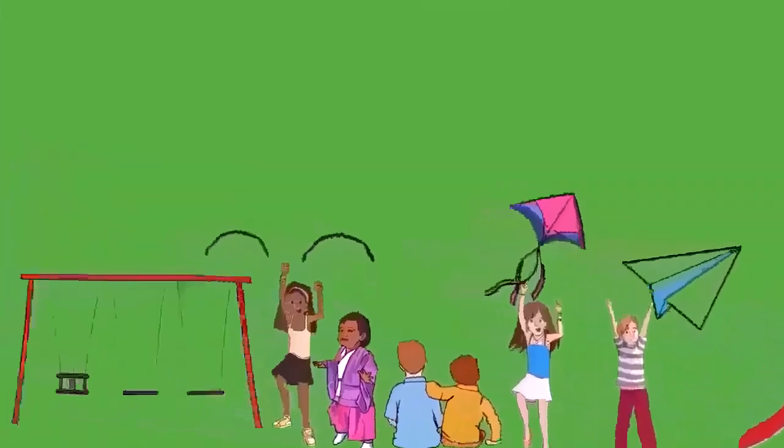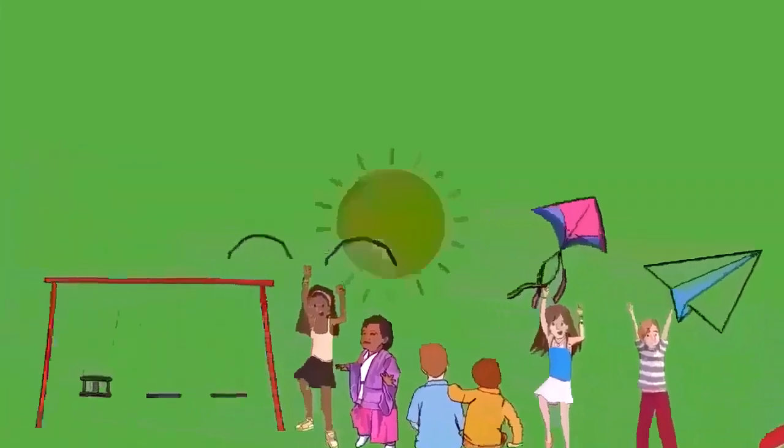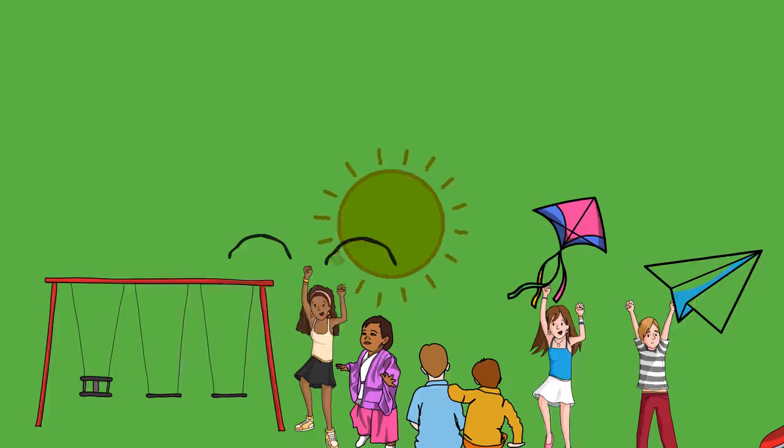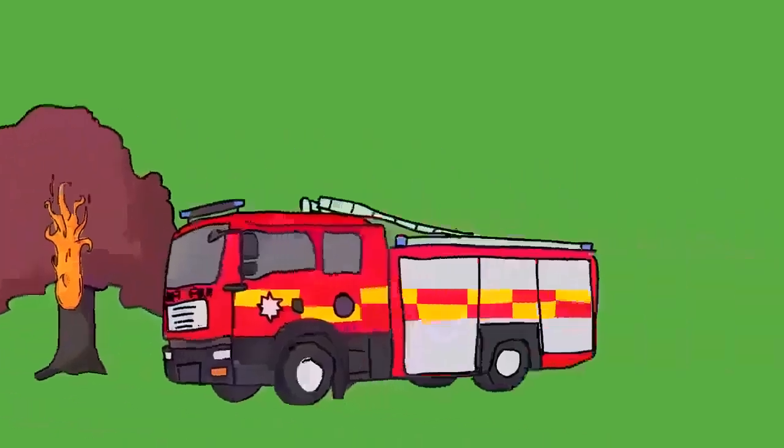Over 90% of the additional energy in the climate system over the last 50 years has been stored in the ocean, warming it. The remainder of the additional energy has melted ice and warmed the continents and the atmosphere.